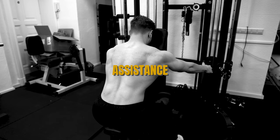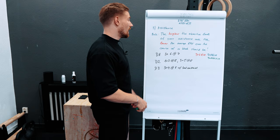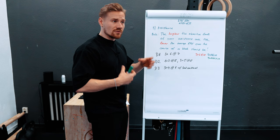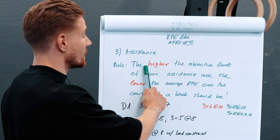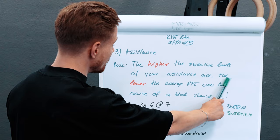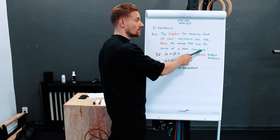Rule number three for using RPEs like a pro is about programming assistance work. Since you're not only training main lifts, you also need a concept for setting RPEs on your assistance exercises. The rule is: the higher the objective loads of your assistance are, the lower the average RPE over the course of a block should be.